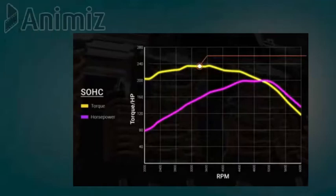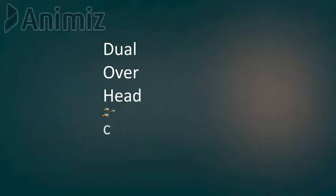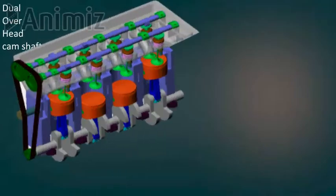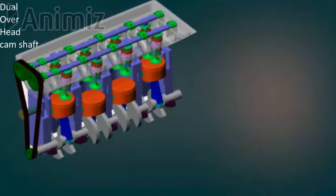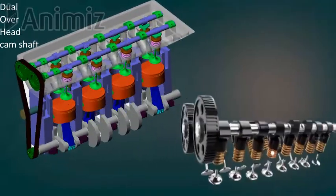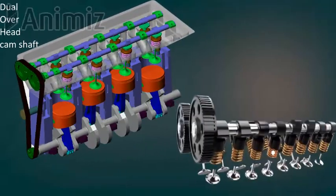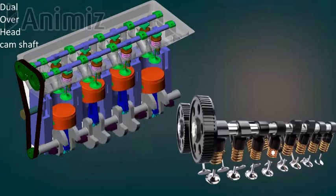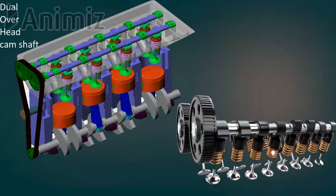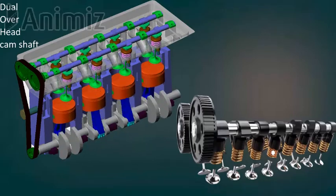The Dual Overhead Camshaft, or DOHC, also produces torque at the rear. The resistance level is high in DOHC.